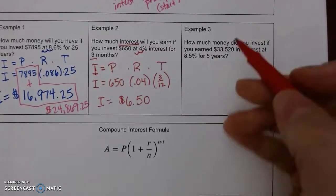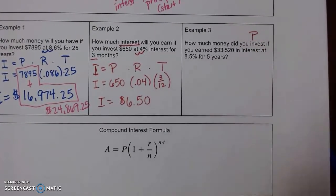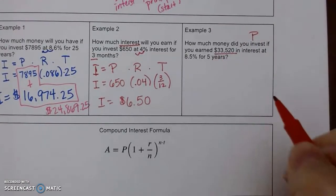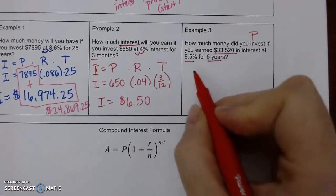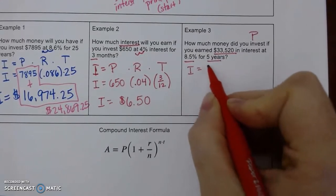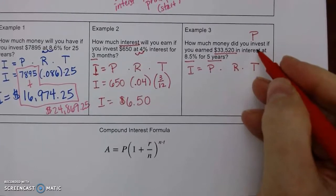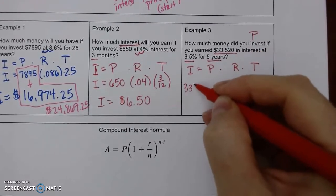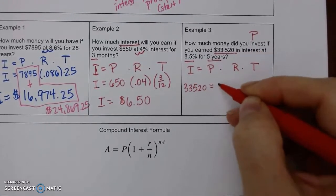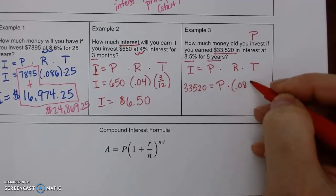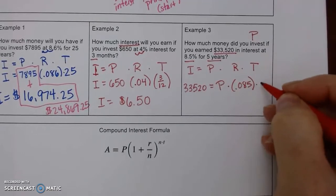Last question. How much money did we invest? So that means we're looking for our principal if we earned, that's our interest, our rate, and our years. So I equals P, R, T. So I know my interest. We're going to substitute. I don't know my principal. I know my rate. We move it 2 to the left, divide by 100, and our time.